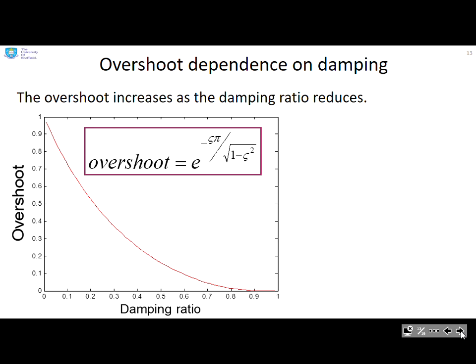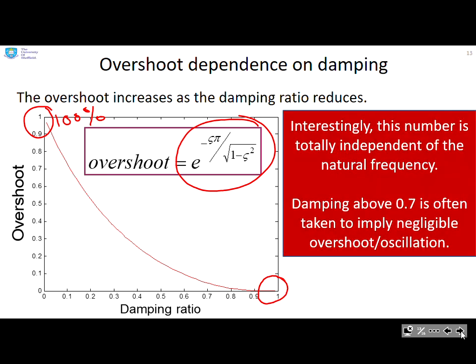Now overshoot is also important. The overshoot is determined by this formula, so we can easily plot a graph of the overshoot against the damping ratio. The maximum possible overshoot is 100 percent because that corresponds to pure oscillation, and the minimum overshoot when the damping gets to one is zero. Interestingly, this number is totally independent of the natural frequency ωₙ. Often people choose a value of about 0.7 because with 0.7 the overshoot is going to be around 5 percent, which is often relatively insignificant. So anything above 0.7 is taken to be acceptable.